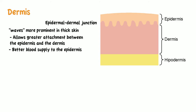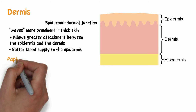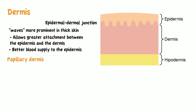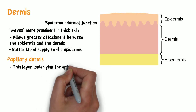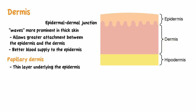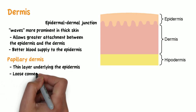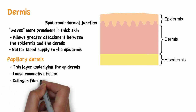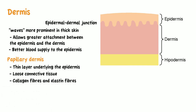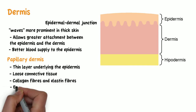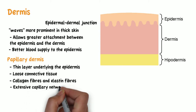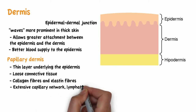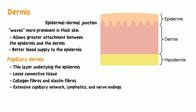The dermis is divided into two layers. The papillary dermis is a thin layer underlying the epidermis, composed of relatively loose connective tissue made up of collagen fibers and elastin fibers. This layer contains an extensive capillary network, lymphatics, and nerve endings.